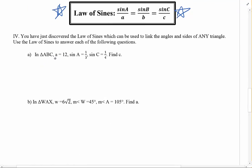So it says in triangle ABC, A is 12, sine A is a third, sine C is a quarter, find C. Okay, well it tells me about a triangle that I can't see, so I'm going to draw it. A is 12. All right, so I'll put the 12 there.